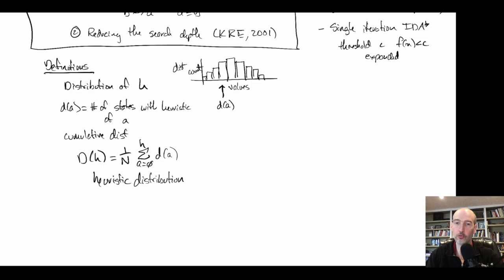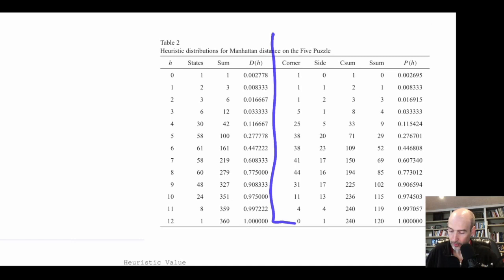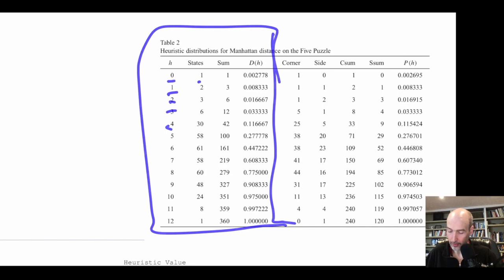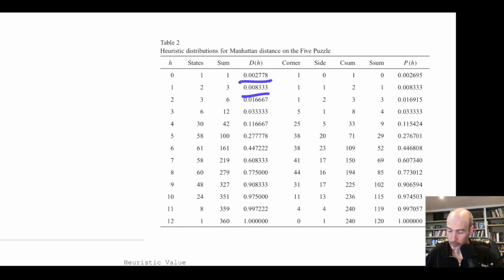I've taken a table from the Korf, Reid, and Edelkamp paper. For each heuristic value we can ask how many states have that heuristic value, and what is the cumulative sum of states so far. Each entry divided by the total number of states gives us our heuristic distribution. This says: if I take a random state in the state space, what is the probability that the heuristic is that value or less? That's D(h), the heuristic distribution.